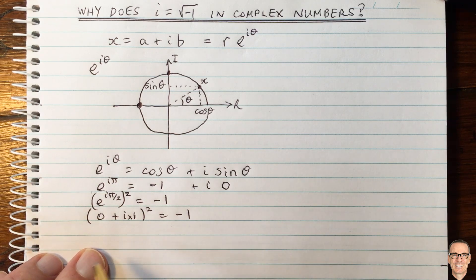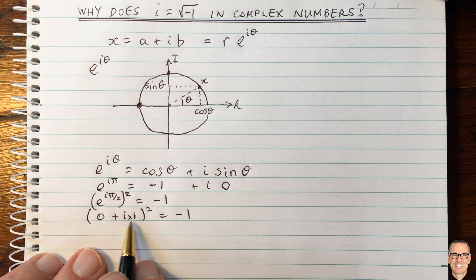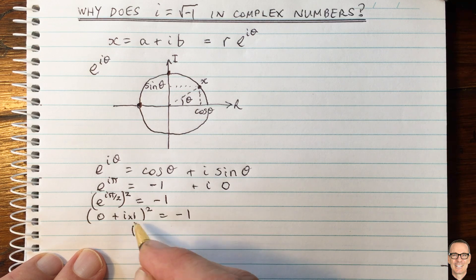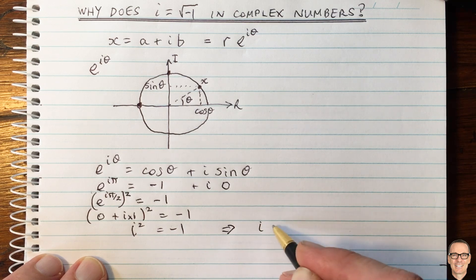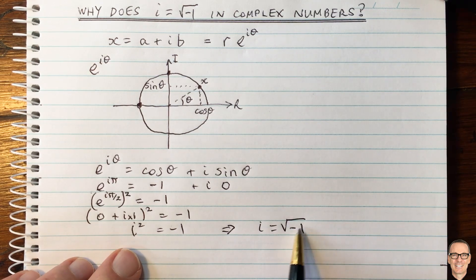So now from this equation here, clearly you can see that 0 plus i squared, so we've got i squared equals minus 1. And that implies, of course, that i equals the square root of minus 1.